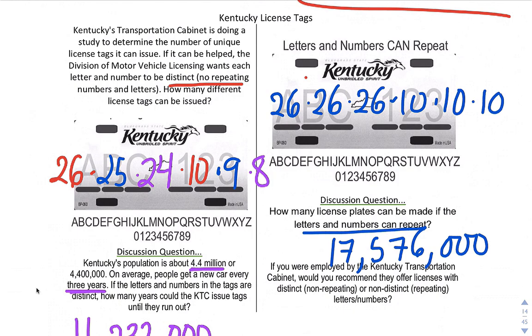If you were employed by the Kentucky Transportation Cabinet, would you recommend they offer licenses with distinct, non-repeating, or repeating letters and numbers? You can clearly see that if you can repeat letters and numbers, that you are going to get way more possible license plates.